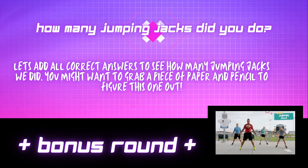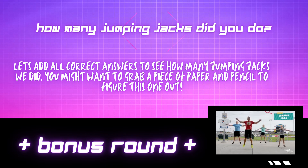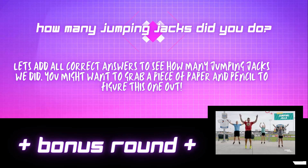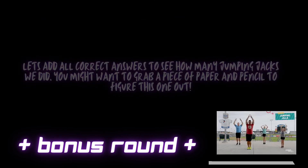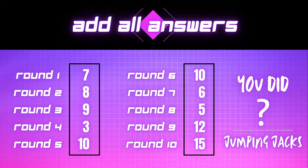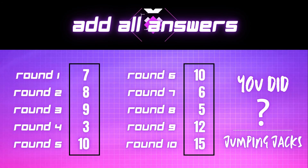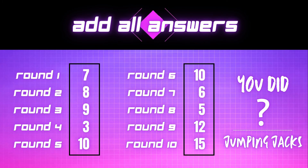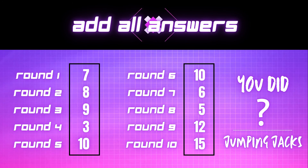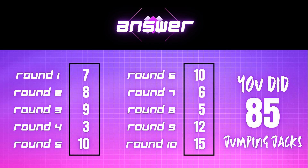Bonus round! How many jumping jacks did you do? Let's add all the correct answers to see how many jumping jacks we did. You might want to grab a piece of paper and a pencil to figure this one out. Add all answers from each round — you have 30 seconds to figure out how many jumping jacks you did total. The correct answer is 85. If you got every single round correct, you did 85 jumping jacks during this game.